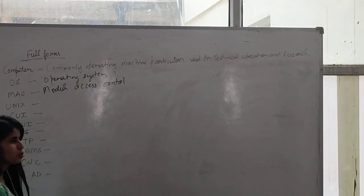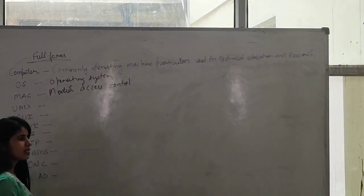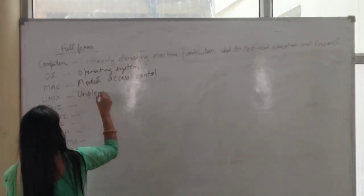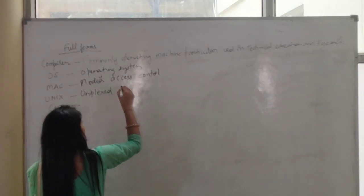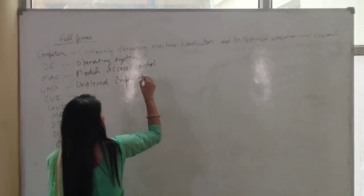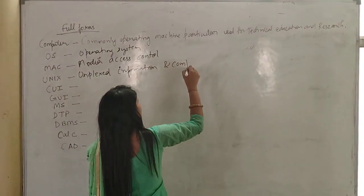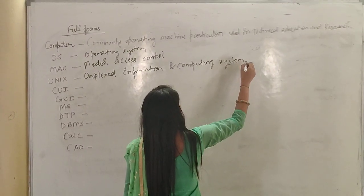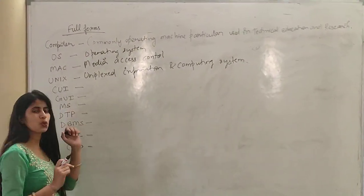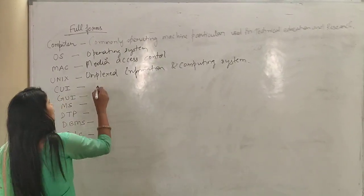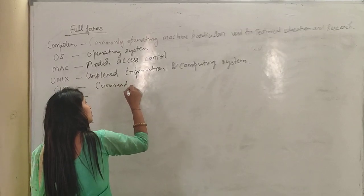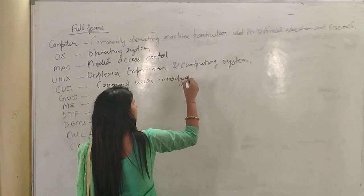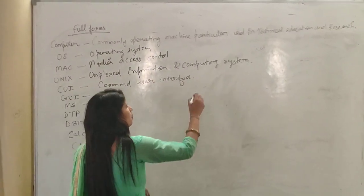Next one is UNIX. UNIX is a kind of operating system and it stands for Uniplexed Information and Computing System. Next one is CUI. CUI is a kind of interface and it stands for Command User Interface. MS-DOS is an example of it.